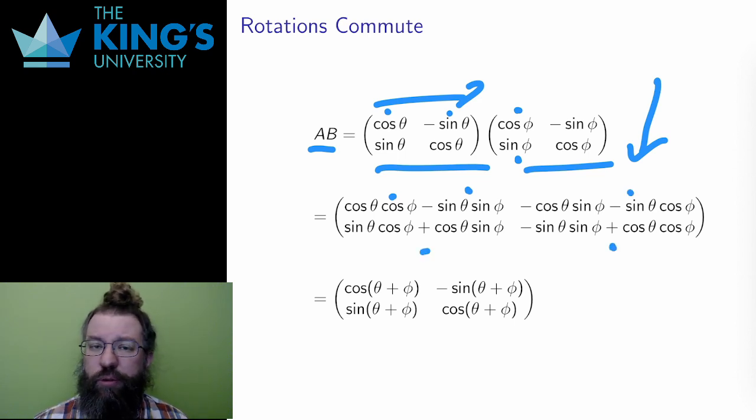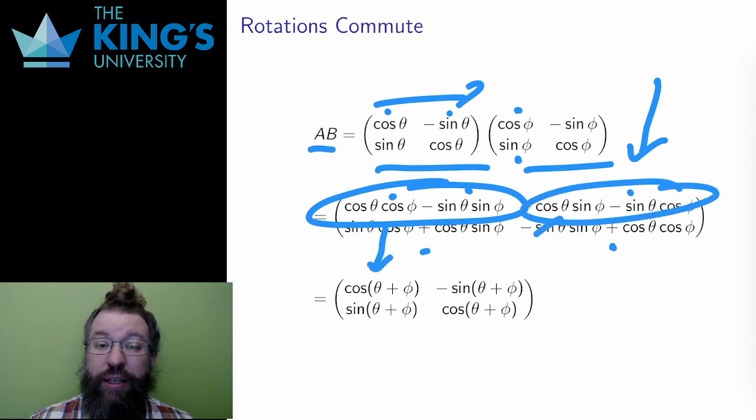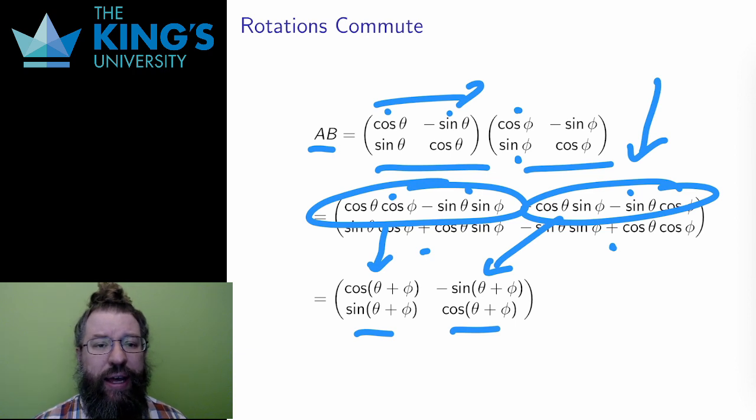Then I can do some trigonometry. These combinations look familiar, at least if I have any memory of my trig identities. These are sum identities. The first is exactly the identity for the cosine of a sum of two angles, and the second is the negative of the sine of a sum of two angles. And likewise for the last two entries. And this also made sense. I expected the angles to add up. If I do two rotations by some angle, well then I've just done some rotation by the sum of the two angles. Looks good.